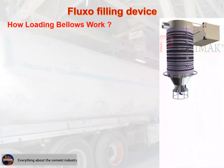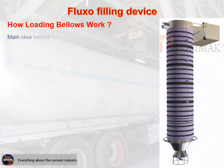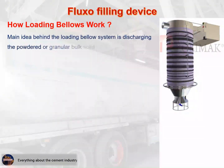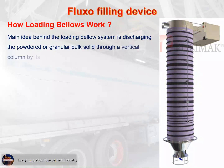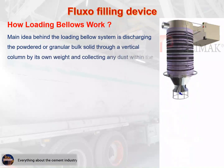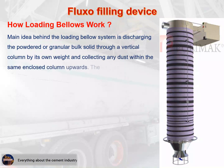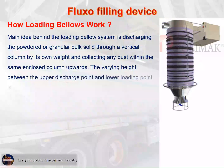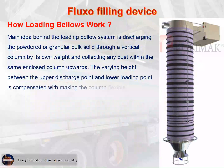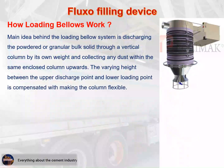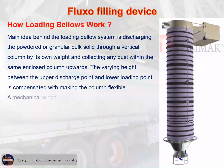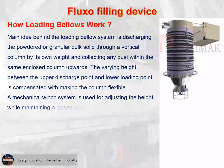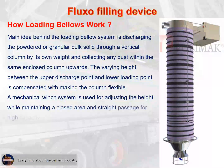How loading bellows work: the main idea behind the loading bellows system is discharging the powdered or granular bulk solid through a vertical column by its own weight, and collecting any dust within the same enclosed column upwards. The varying height between the upper discharge point and lower loading point is compensated by making the column flexible. A mechanical winch system is used for adjusting the height while maintaining a closed area and straight passage for high capacity loading.